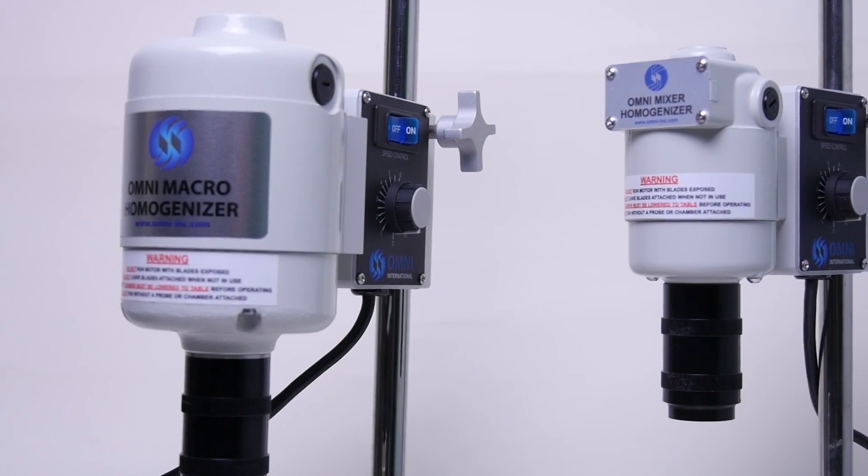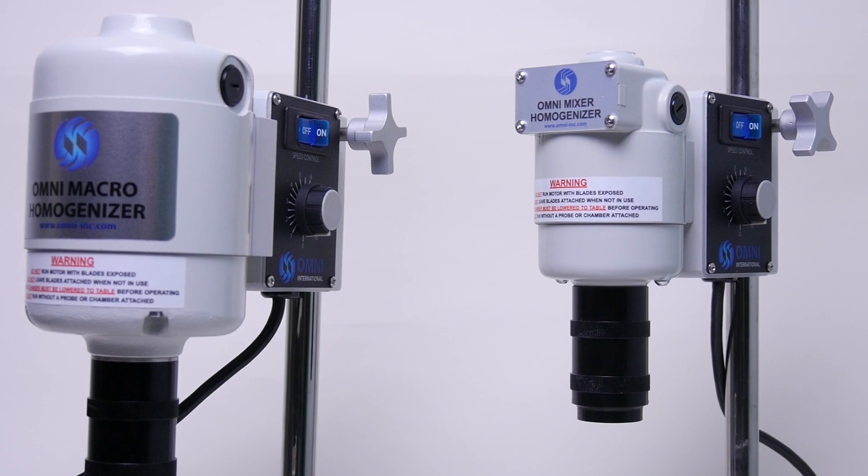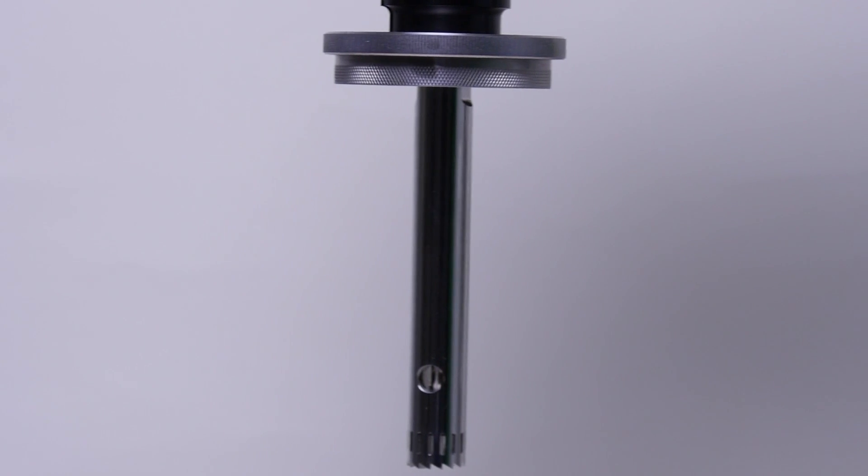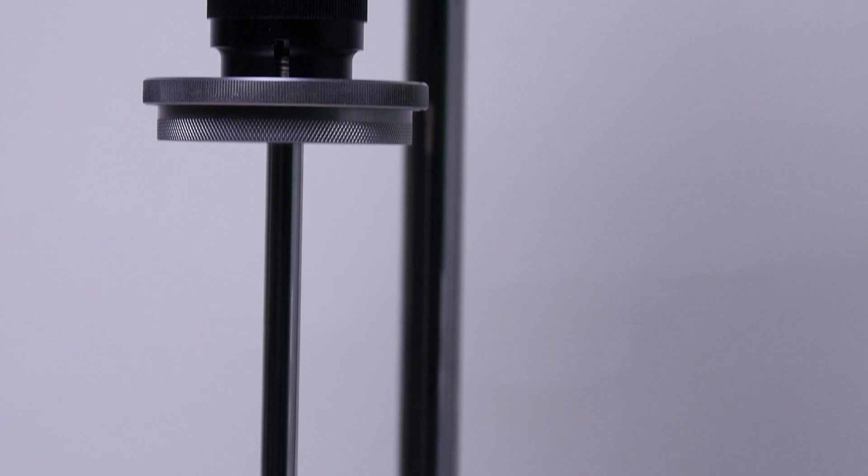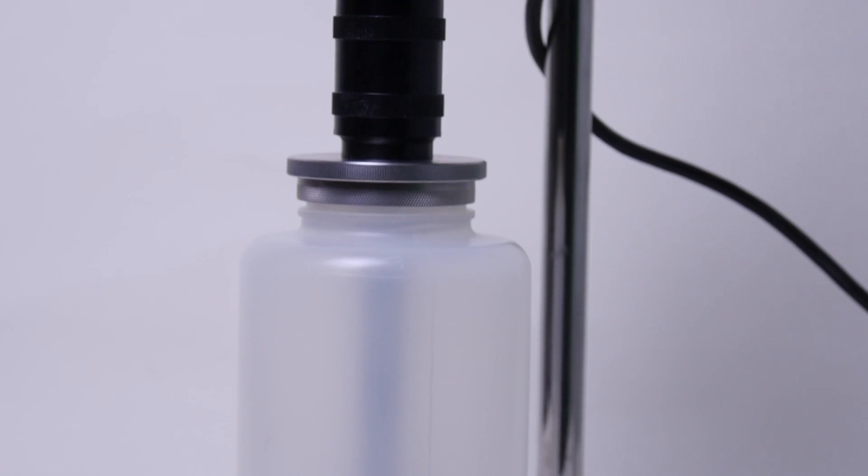Omni Mixer and Macro homogenizers can be used with a large assortment of generator probes and cutting blade accessories, both of which were designed to be interchangeable inside specially designed sealed containers.